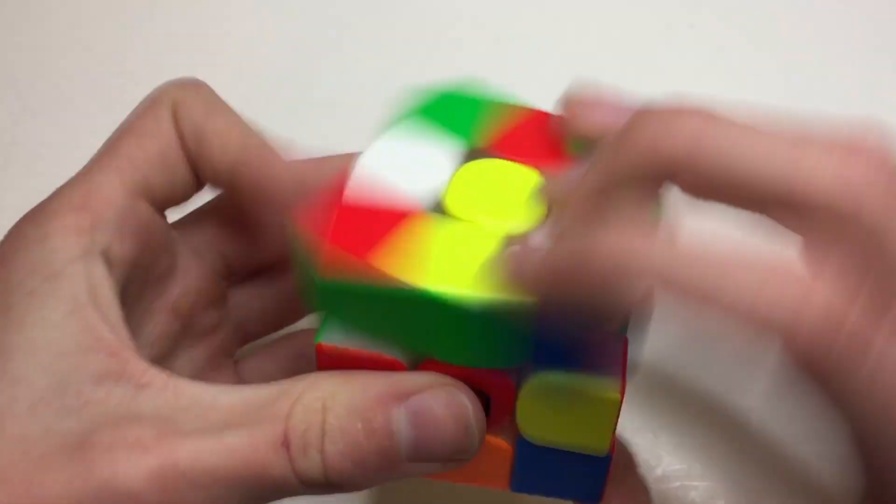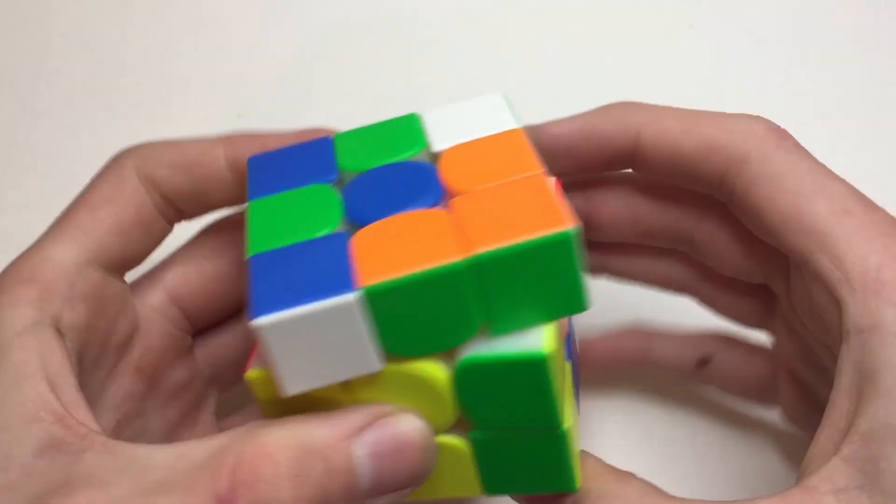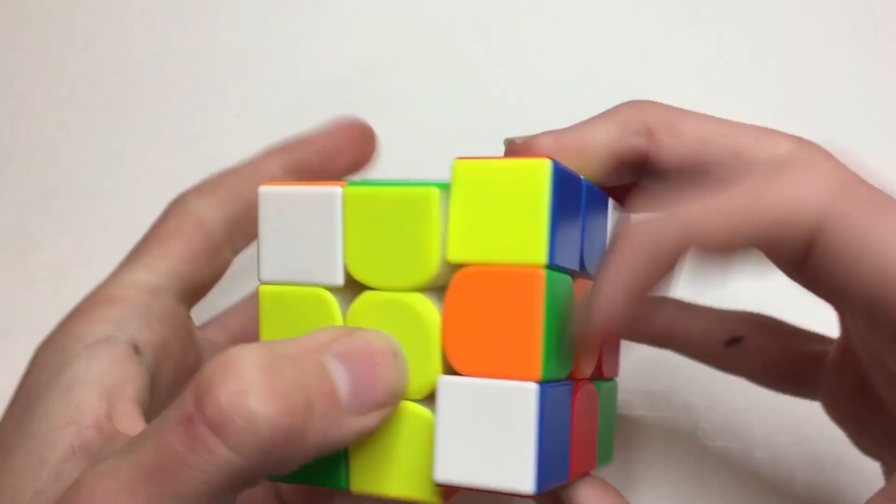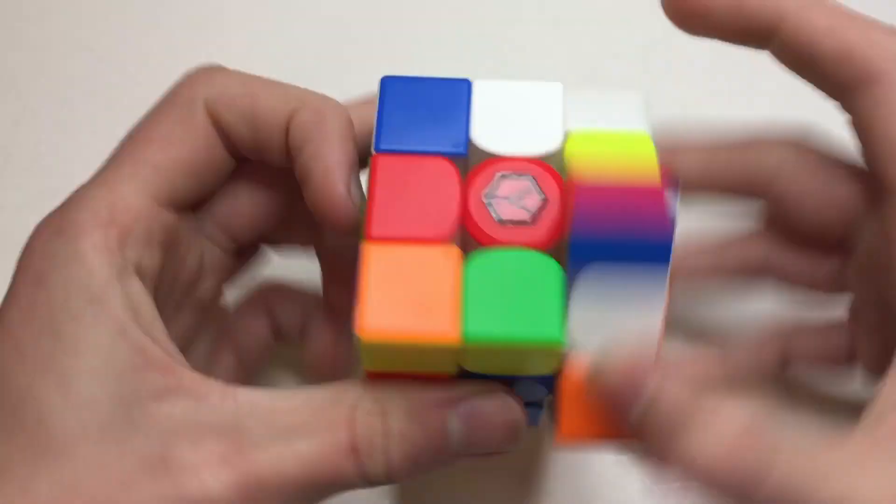This cube, as many of you know, also features a core magnet system, which I'm not going to show because I don't want to mess up the lube on the inside. I already took this cube apart during my unboxing and was very careful not to mess up the lube. If you guys want to see what the inside of this cube looks like, you can head over to my unboxing video and see the core magnets for yourself there.